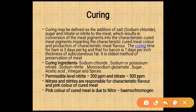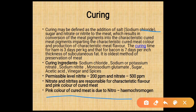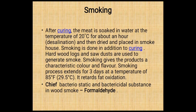Curing is defined as the addition of salt (sodium chloride), sugar, and nitrate or nitrite to meat, resulting in conversion of meat pigments into characteristic cured meat pigments, imparting a characteristic color and producing characteristic cured meat flavor. Curing time for ham is about 3 days per kg; for bacon it is about 7 days per inch thickness of subcutaneous fat. Curing is the oldest method of preservation of meat. Curing ingredients include sodium chloride, sodium/potassium nitrate, sodium nitrite, monosodium glutamate, sugar, acetic acid, vinegar, and spices.